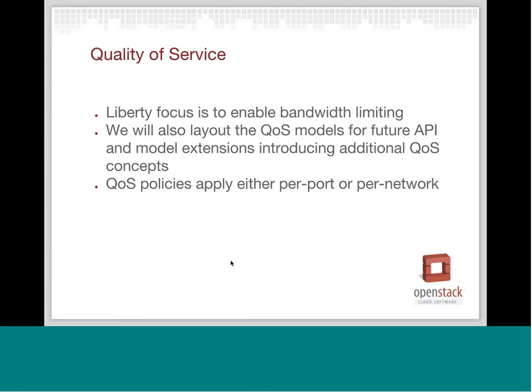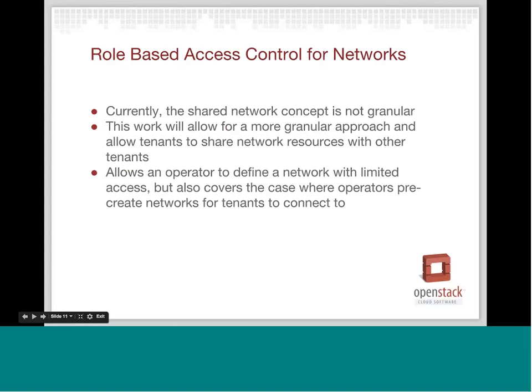We're currently targeting QoS policies either per port or per network. Another feature we're looking at is role-based access control for networks. This is a really huge feature because currently our shared network concept is not granular — we have the concept of a shared network, but it's all or nothing. This is actually going to allow tenants to create and share network resources with other tenants if they want. It will also allow an operator to define networks and limit access as well. Right now an operator can define a shared network but it's shared between all tenants, so this would allow them to create maybe tiers of shared networks. I think this will be a useful feature for operators to have.